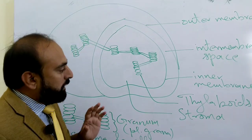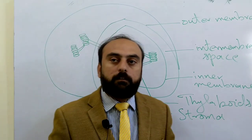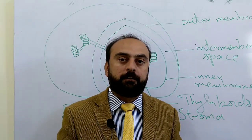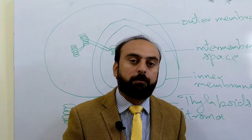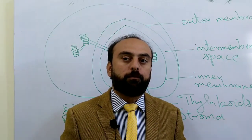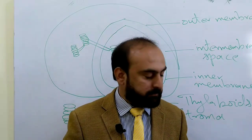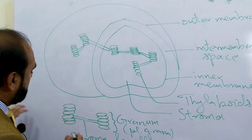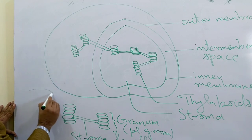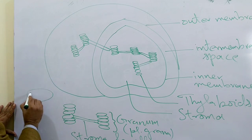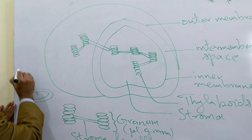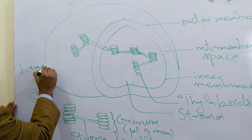These thylakoids have protein complexes for light-driven reactions. There are four transmembrane proteins and two mobile carriers. The inside space of these thylakoids is called the lumen.